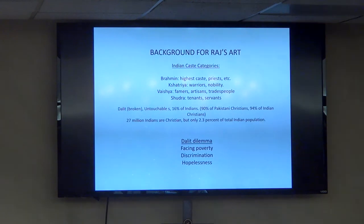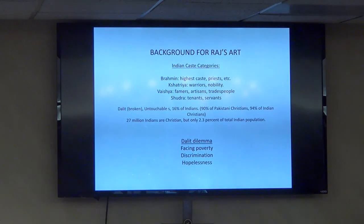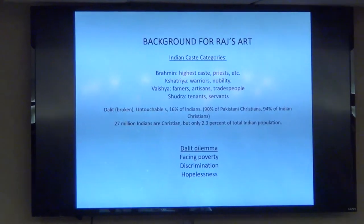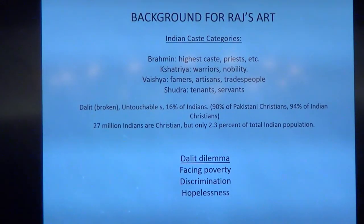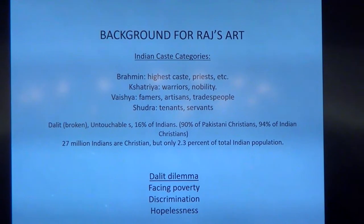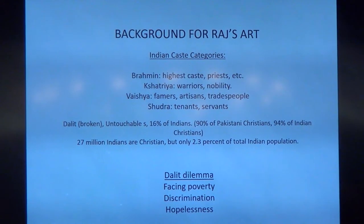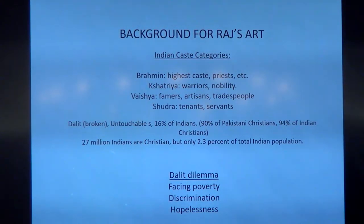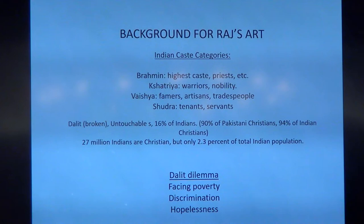In India today, there are still these caste categories which divide people according to their heritage. If you're born into it, you know it. A Brahmin is the priestly caste. The Shatriya are the warriors and nobility. The Vaisha are farmers, artisans, and tradespeople. The Shudra are tenants and servants. Those are known castes.